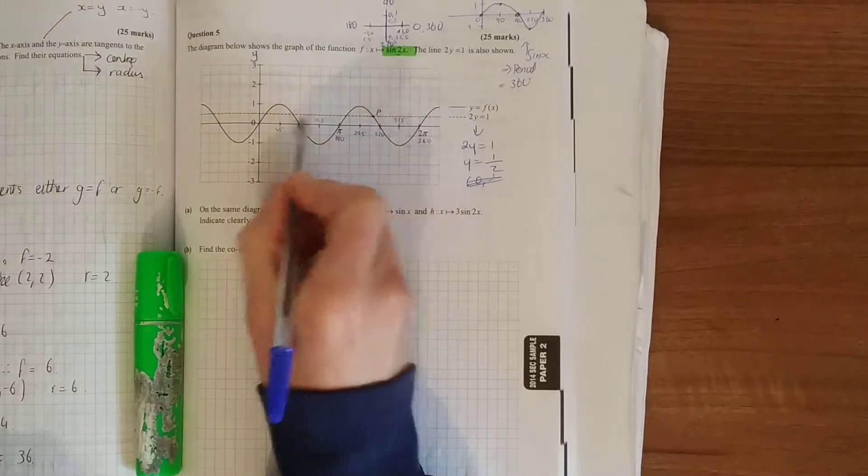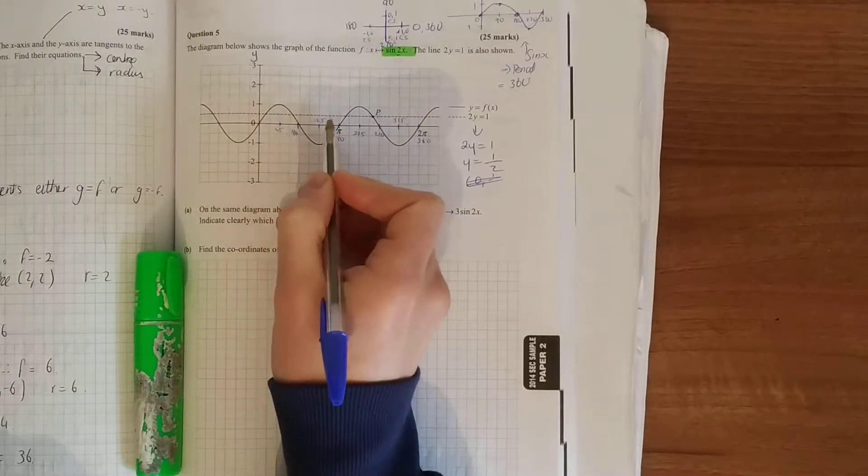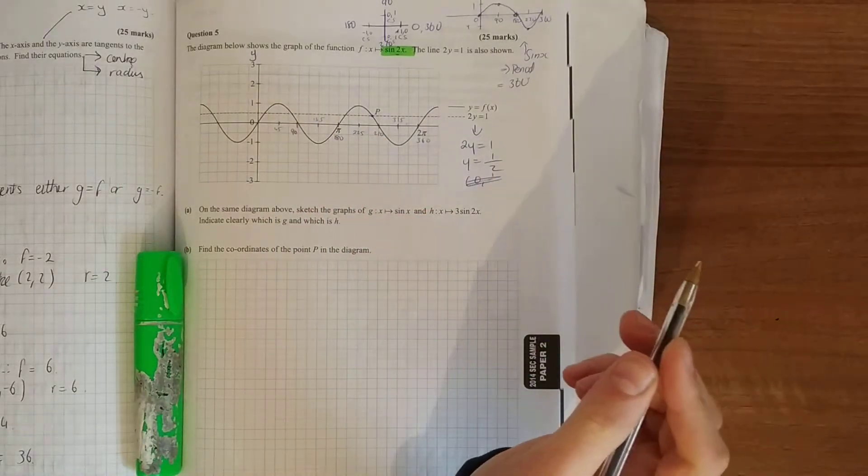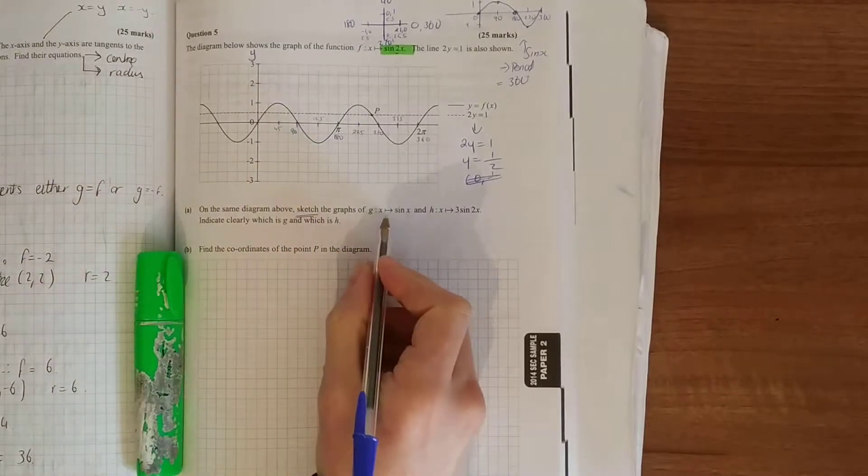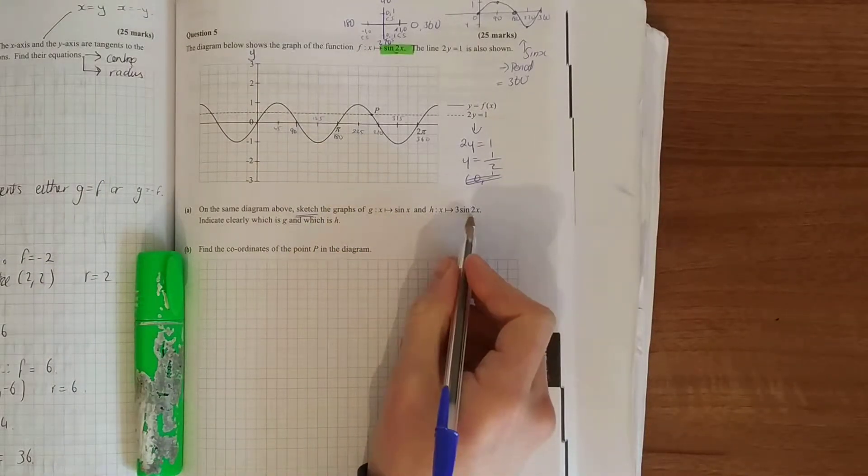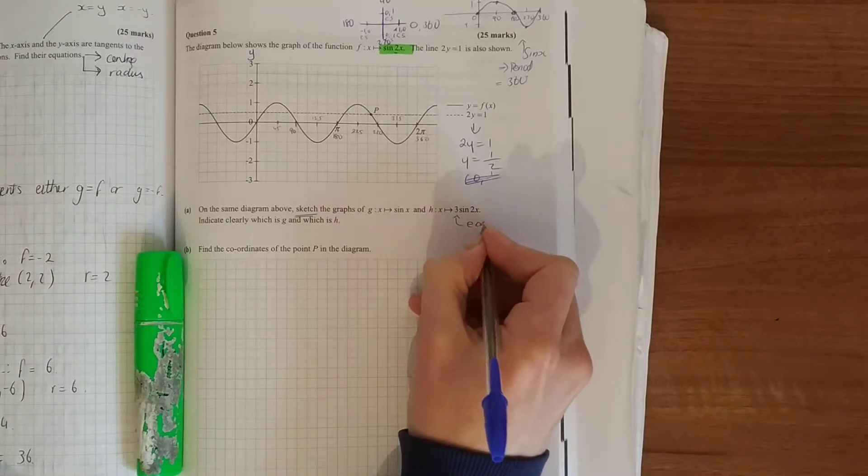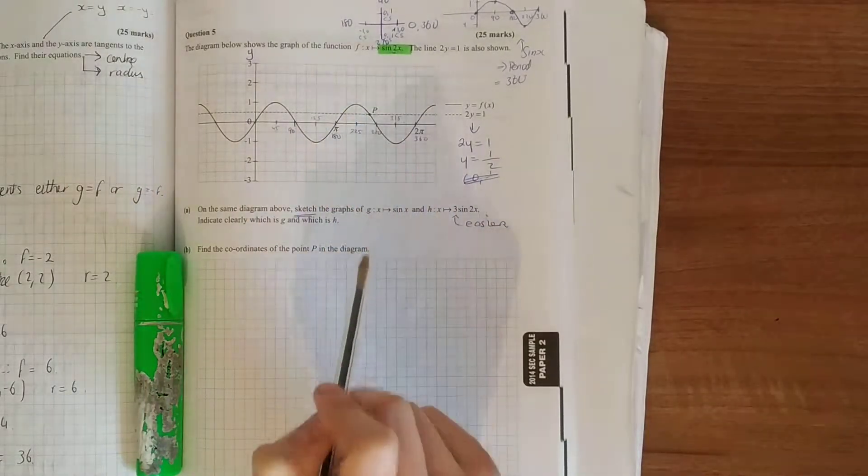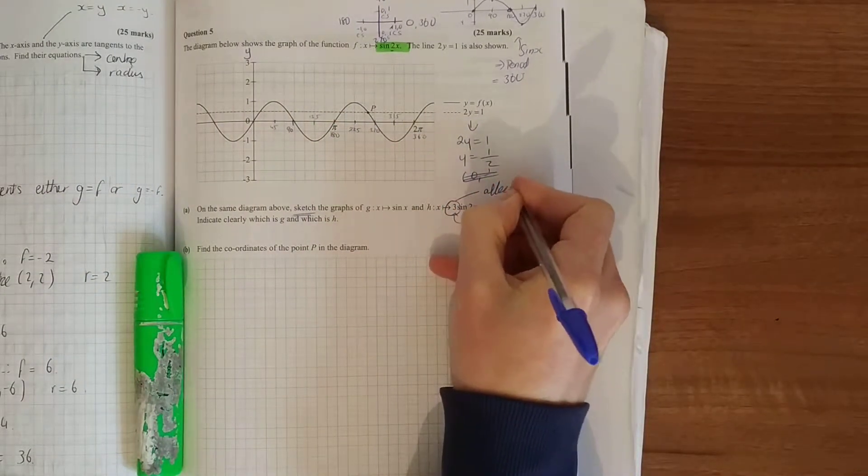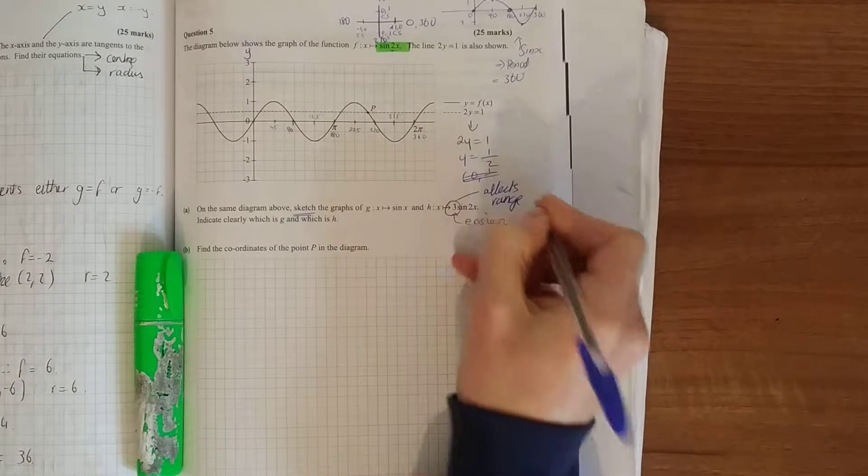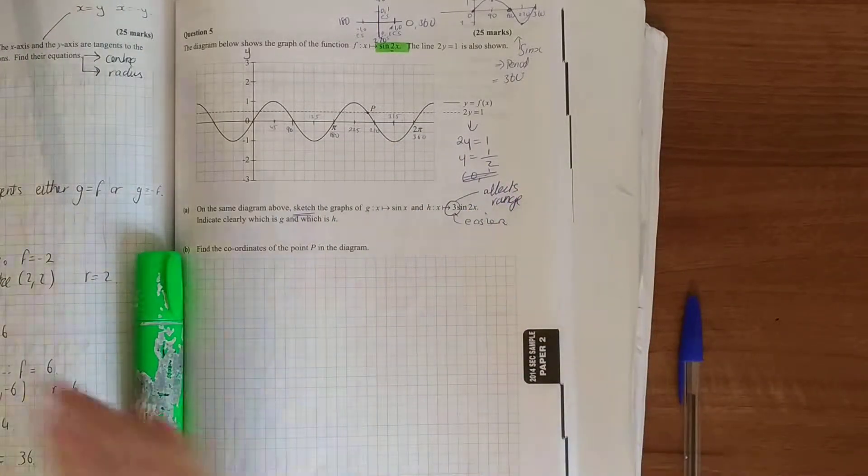Every value along there will be something a half. On the same diagram, sketch the graphs of sine x and 3 sine 2x. This is the easier place to start. We have sine 2x, so 3 sine 2x—the number in front affects the range, three times the height.